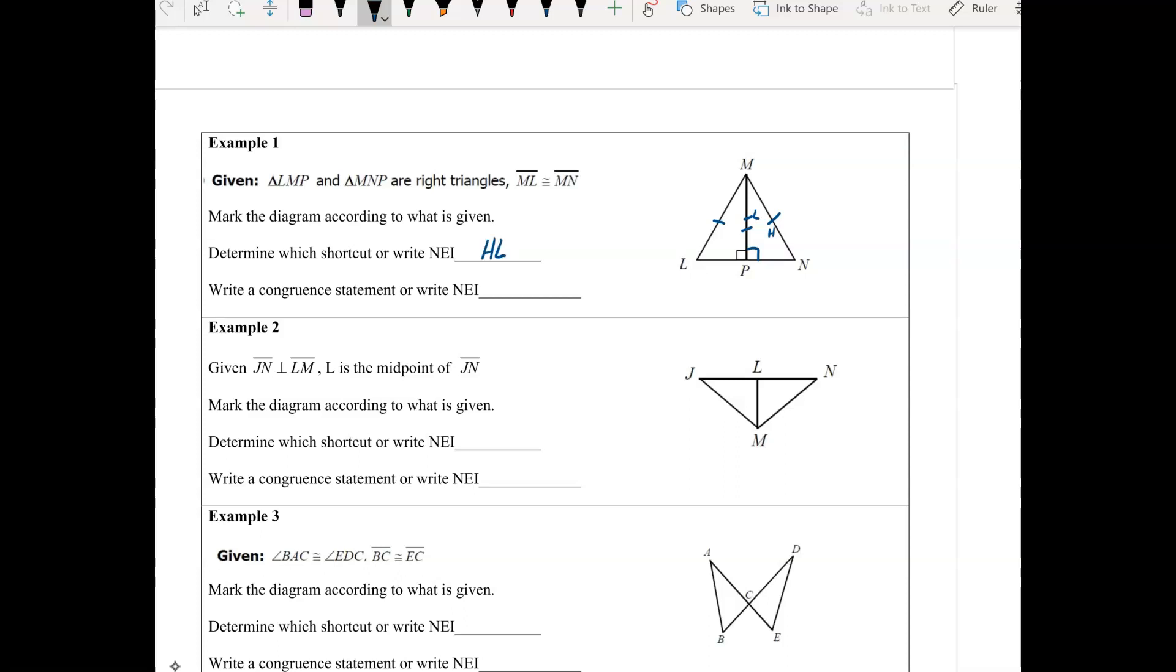Congruent statement for this, triangle LMP, LMP is congruent to, L corresponds with N, M corresponds with the other M, and P are both of the right angles, so they're both, they're two different right angles, but they're both with the vertex P. There's an example with HL.